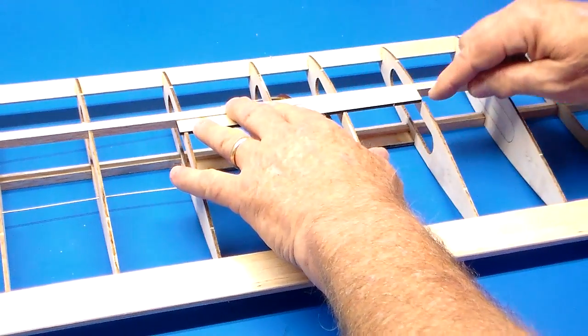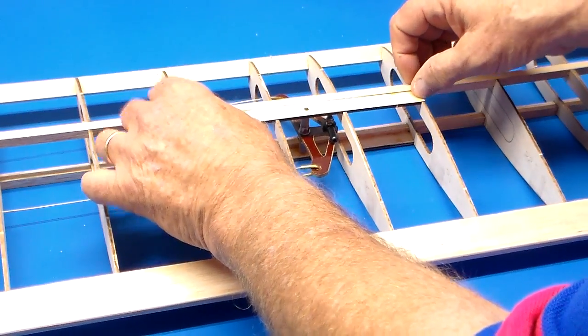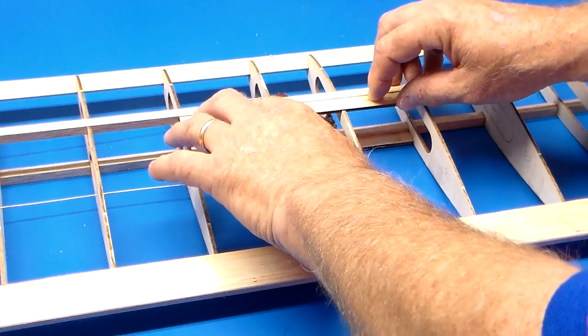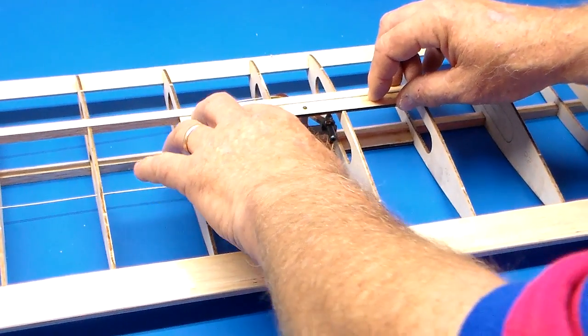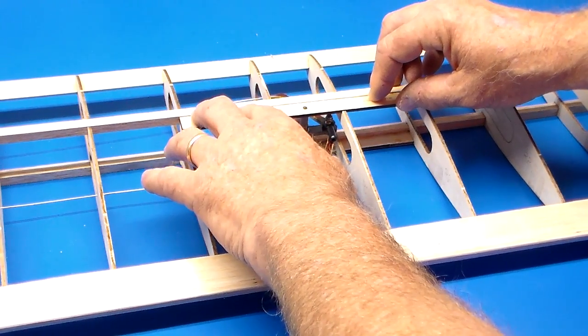These ribs have notches cut the right width for this piece of eighth inch plywood. You put your glue in the notches and against the spar, weight it down, and then you've got something that will very well surpass the needs of a pull test.